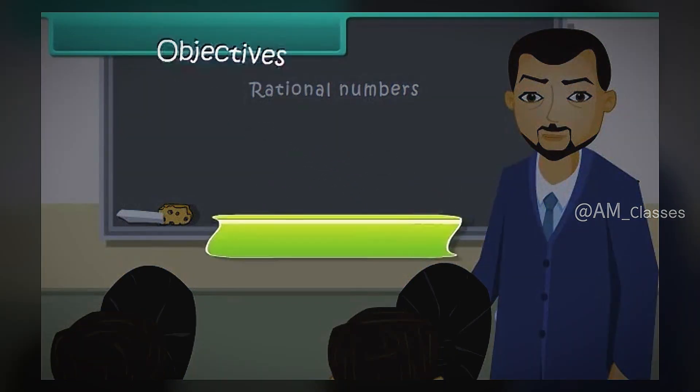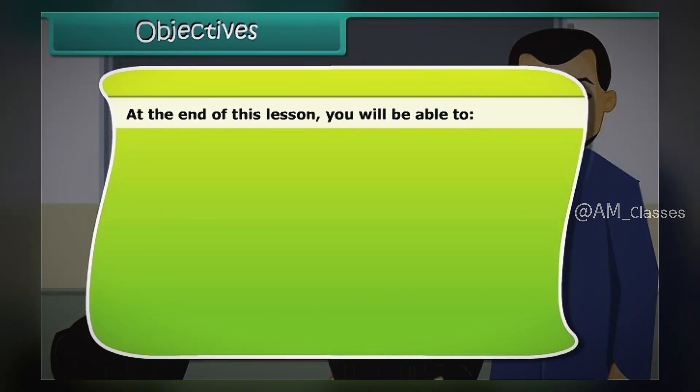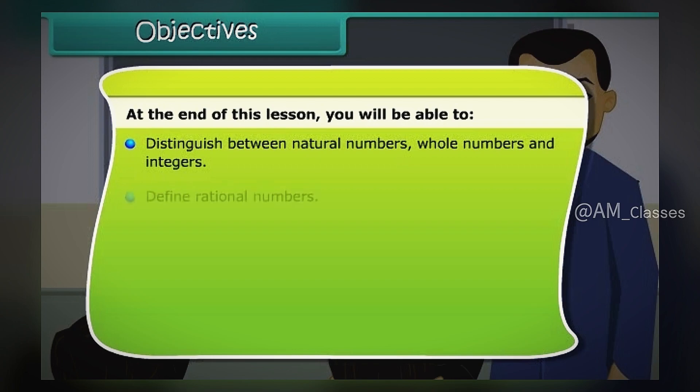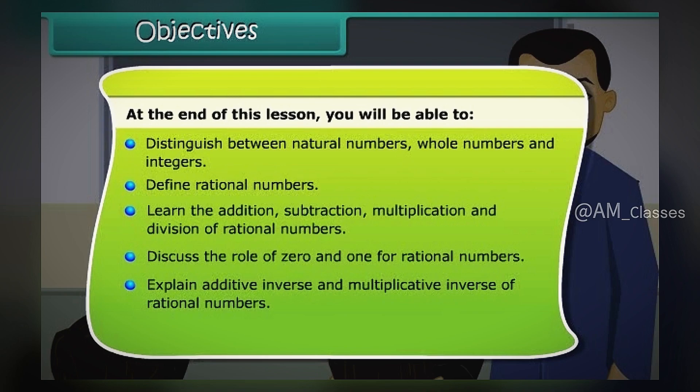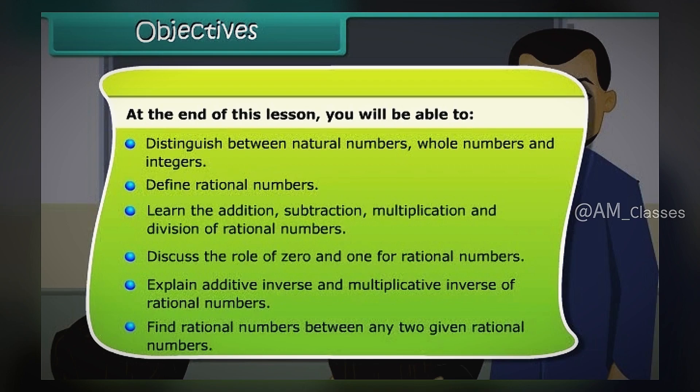Objectives. At the end of this lesson, you will be able to distinguish between natural numbers, whole numbers and integers, define rational numbers, learn the addition, subtraction, multiplication and division of rational numbers, discuss the role of 0 and 1 for rational numbers, explain additive inverse and multiplicative inverse of rational numbers, and find rational numbers between any two given rational numbers.